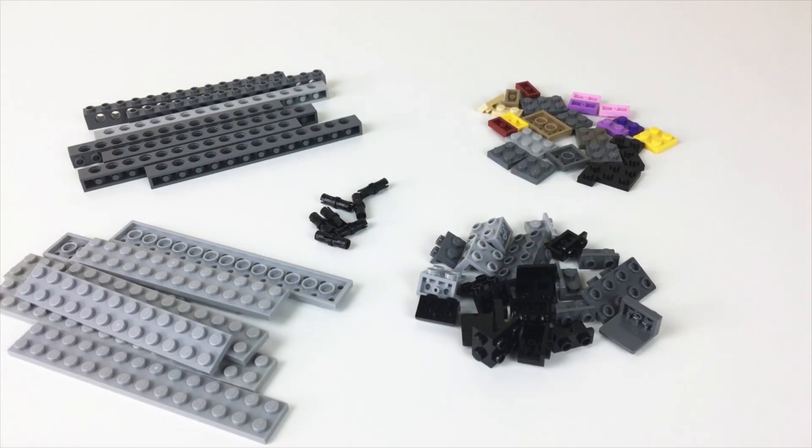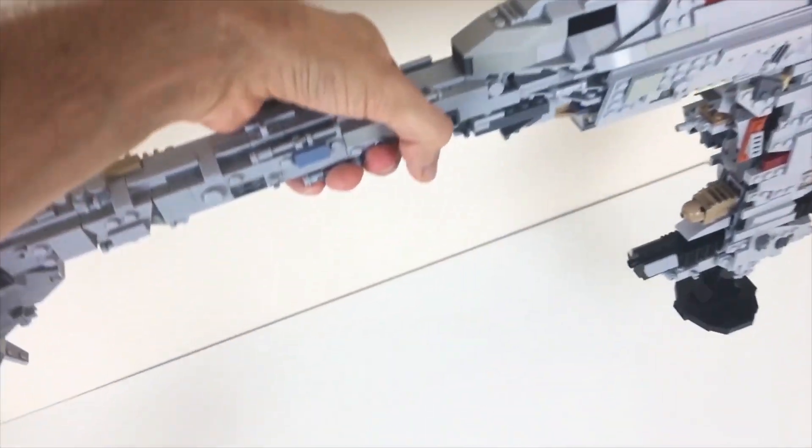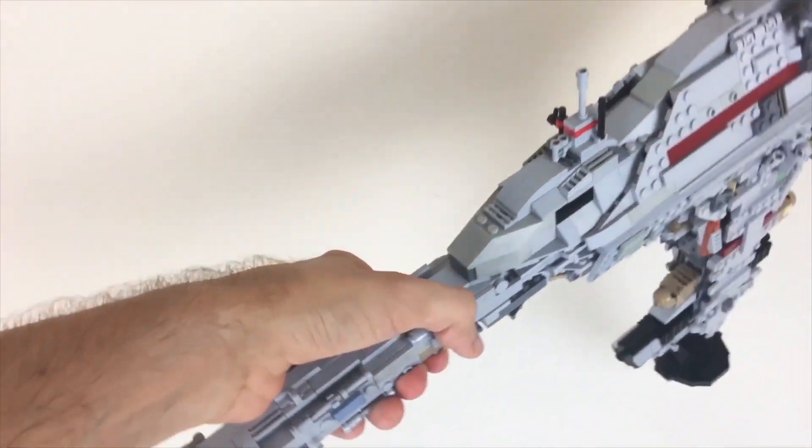Hey guys, it's 2bricks and I wanted to bring you a quick tips and tricks tutorial video today to show you a technique that I've used a lot to create really strong but fairly narrow structures, like for example the neck of the Nebulon B frigate which I showed in a previous video.